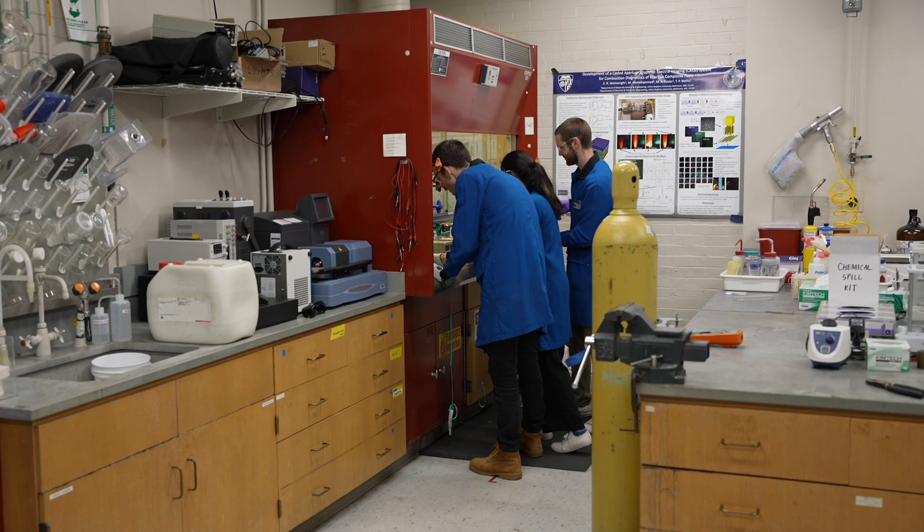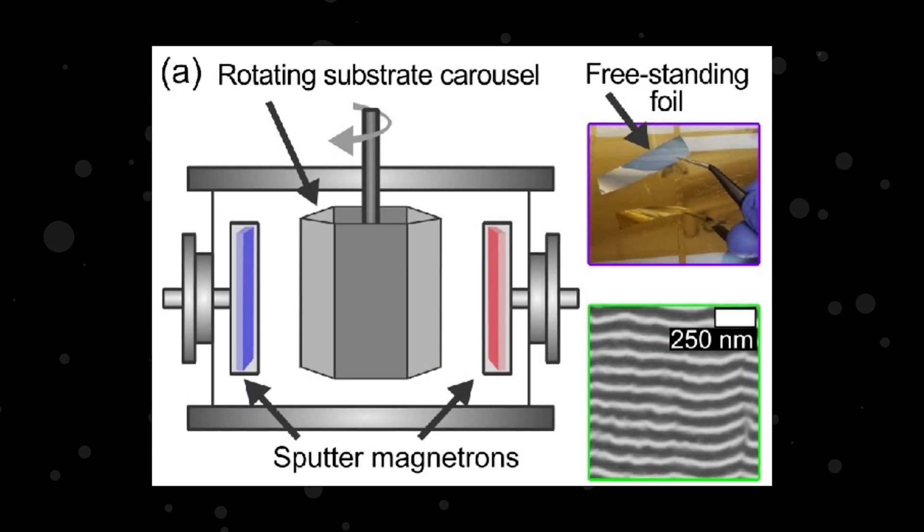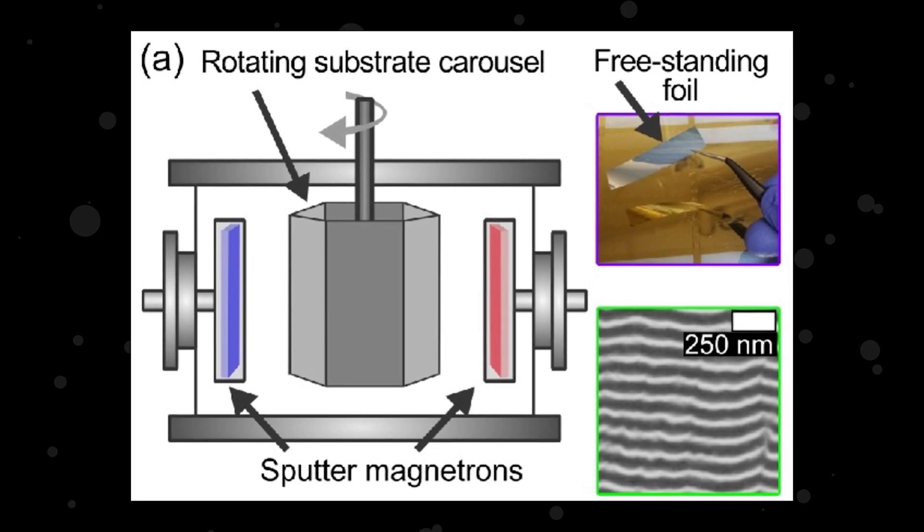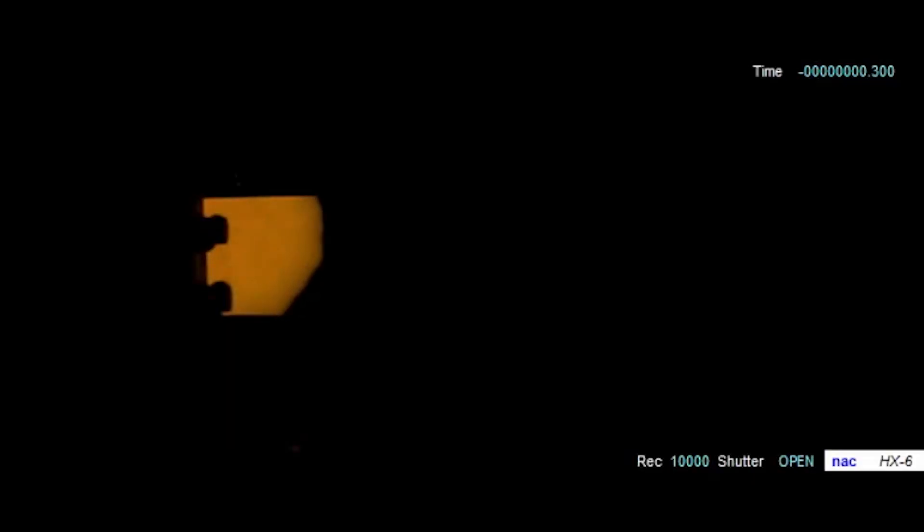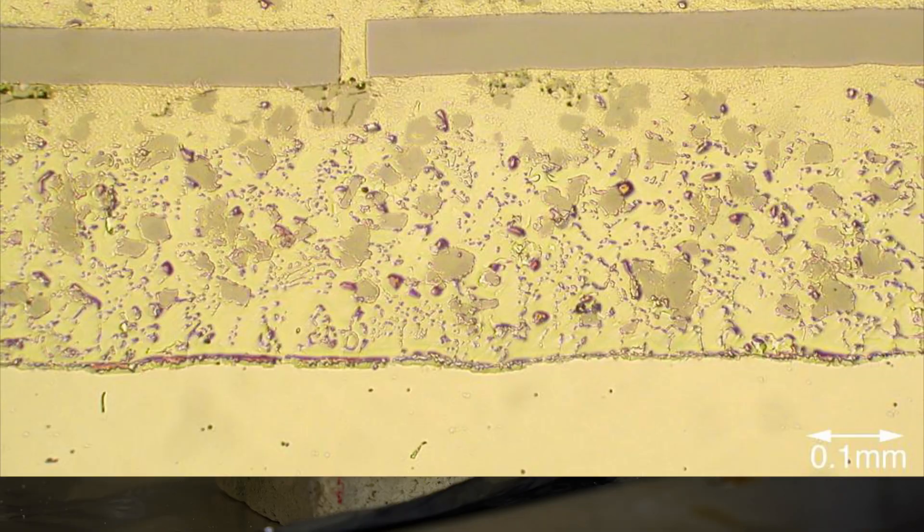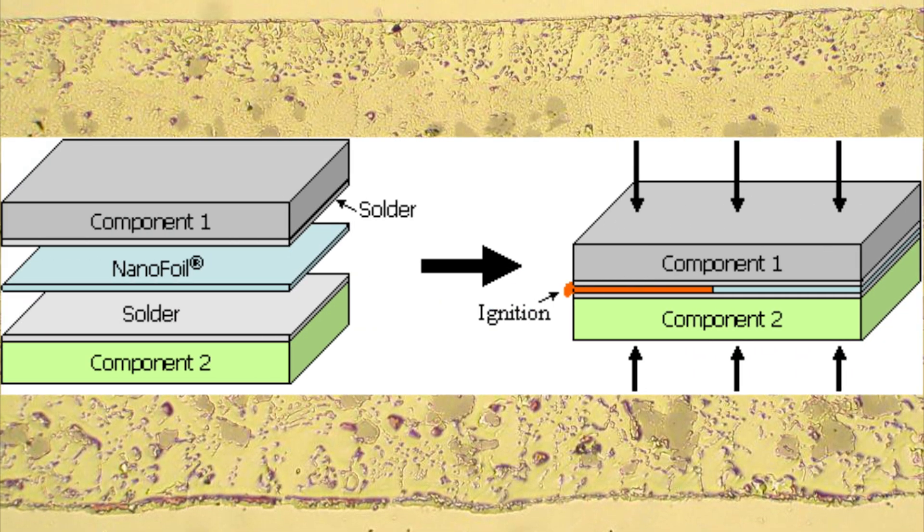When I first arrived at Hopkins, my group and I focused on sputter depositing thick foils with hundreds of nanoscale layers of metals that mix exothermically. These foils served as model materials for studying both exothermic phase transformations as well as acting as local heat sources for soldering components together.